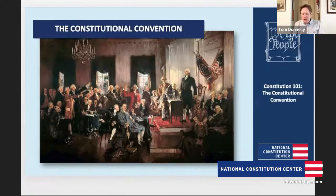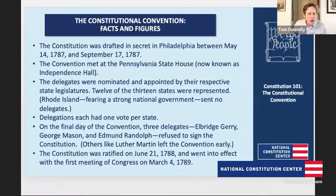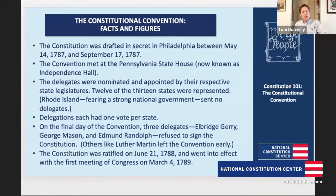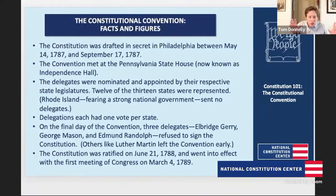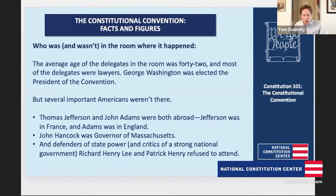The convention was held at the Pennsylvania State House, now known as Independence Hall. The delegates were appointed by their state legislatures and voted by state — whether you have a lot of people or not, each state gets one vote. Rhode Island refused to send a delegation; they thought the whole thing was a scam and didn't want a strong national government. On the final day of the convention, three delegates — Elbridge Gerry, George Mason, and Edmund Randolph — refused to sign the Constitution. The Constitution was ratified on June 21st, 1788, and went into effect with the first Congress on March 4th, 1789.